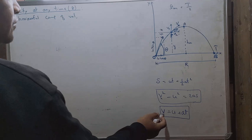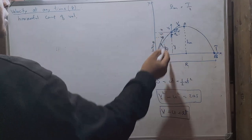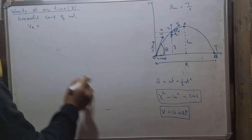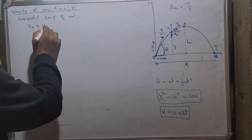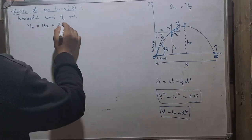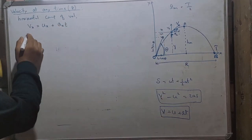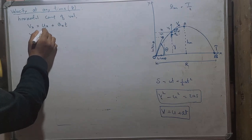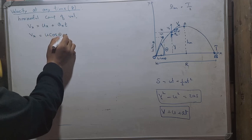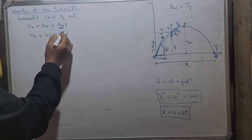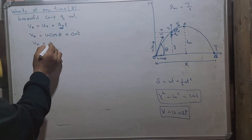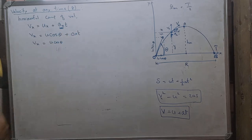For the horizontal component of velocity at point P, using v = u + at: vx = ux + ax × t. Here ux = u cosθ, and since ax = 0, we get vx = u cosθ.